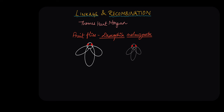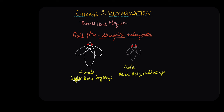In one of his experiments, Morgan was testing female flies that had a white body with long wings and male flies that had a black body with small wings. By this time, Mendel's laws of dominance were well established. Morgan knew that the white body trait was dominant over the black body trait, and long wings were dominant over small wings.